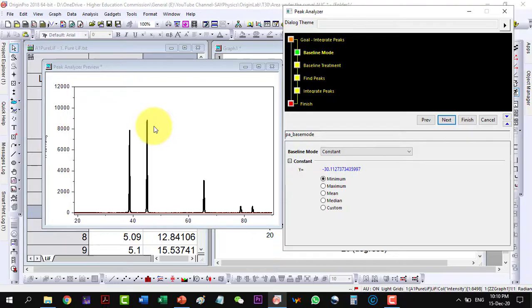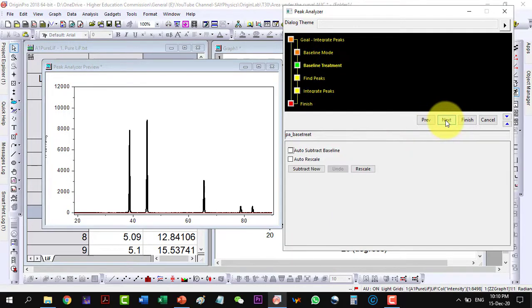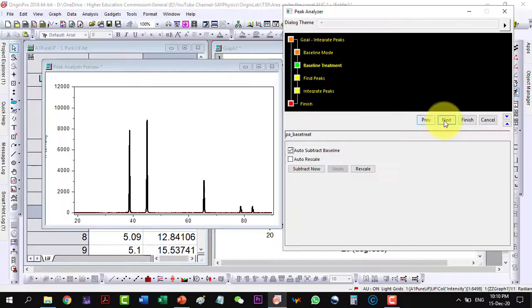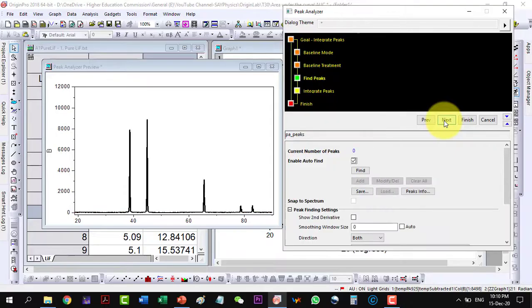This is already baseline corrected data, so I will not do any change here. And I will go to Next. And then I can click auto-subtract the baseline, because it is already having no effect on my data. And I will click Next.